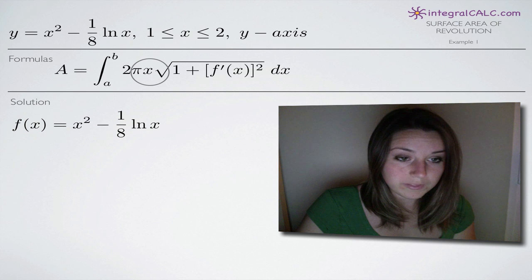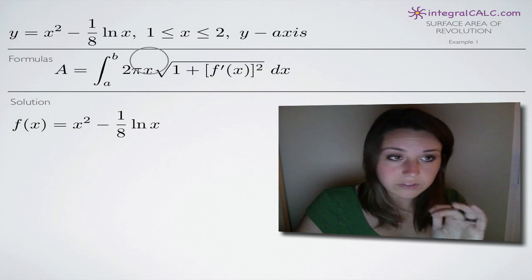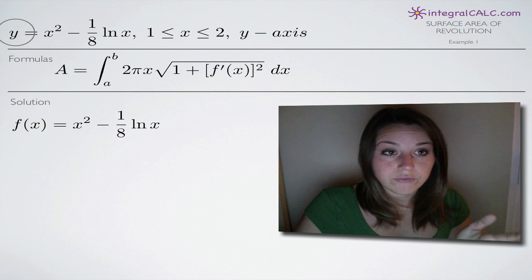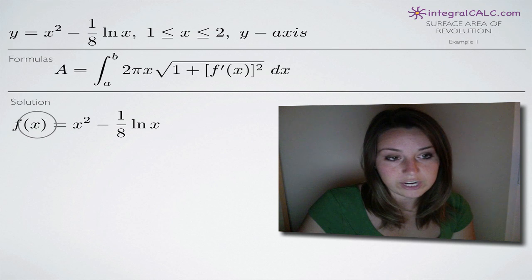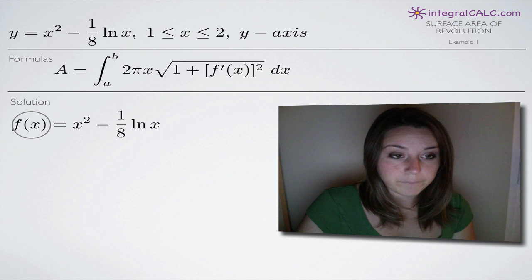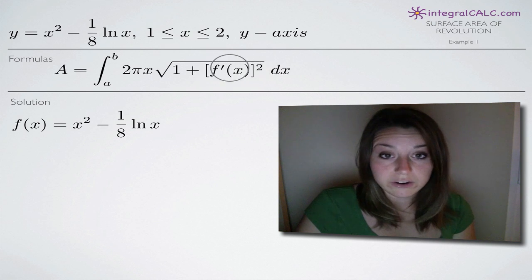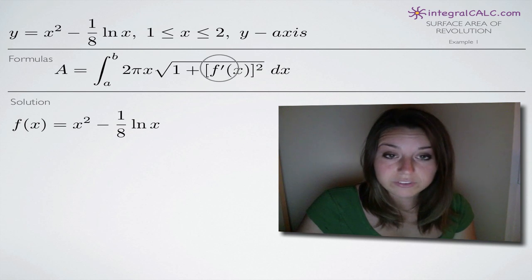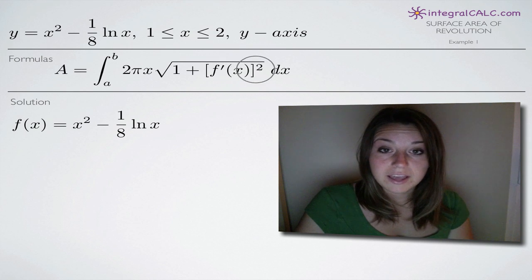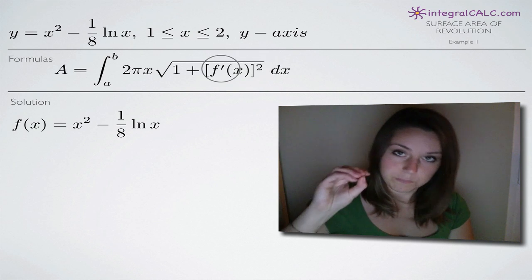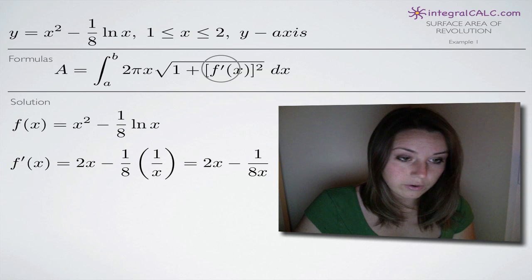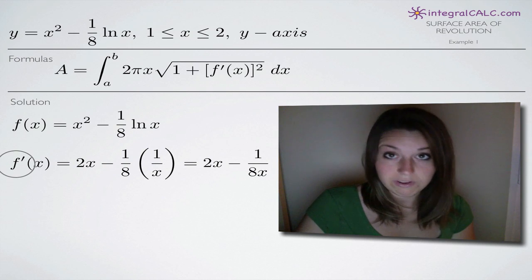We're going to use that formula. First, to simplify things, we're given our equation in the form y equals something, but in our formula we have f of x. It's the same thing, but I'll go ahead and change the notation to f of x so we don't get confused. Now I can work on the derivative piece inside the formula — I want to first take the derivative to get f prime of x.